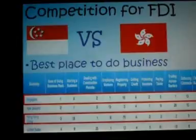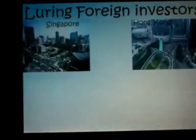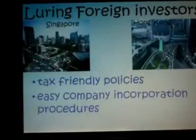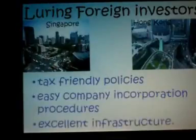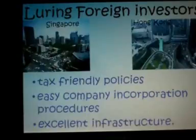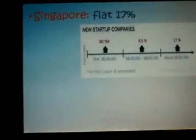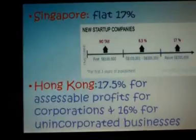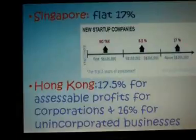Besides, Singapore and Hong Kong have been competing for decades to gain dominance as Asia's best place to do business. Both regions try to lure foreign investors with tax-friendly policies, easy company incorporation procedures, and excellent infrastructure. However, Singapore is at a disadvantage: Singapore's corporate tax is a flat 17%, while Hong Kong's is 17.5% for incorporated businesses and 16% for unincorporated businesses, making investors favour Hong Kong.